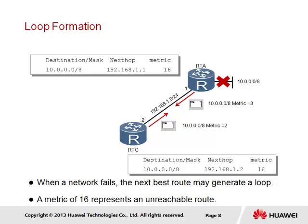In the event that the connection to network 10 on RTA is suddenly lost, the routing entry in RTA will become invalid. RTC, however, contains a route in its routing table to network 10 learned from RTA, and may proceed to advertise this as the best route for network 10 to RTA. Upon receiving this, RTA is able to update its routing entry to network 10 with a hop metric of 2. Since RTC learned this route from RTA, when RTA proceeds to advertise this route to RTC, the route now contains a hop metric of 3, and the cycle continues.